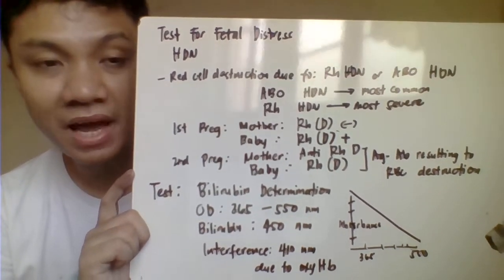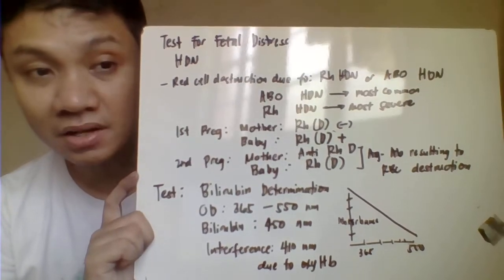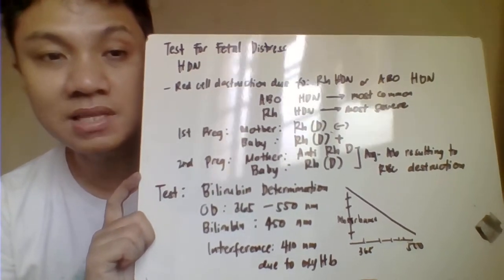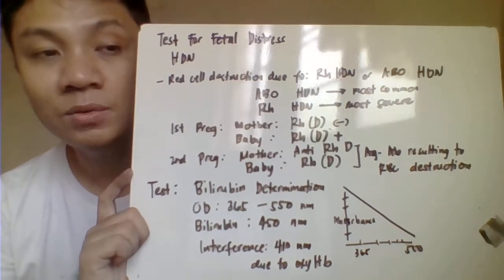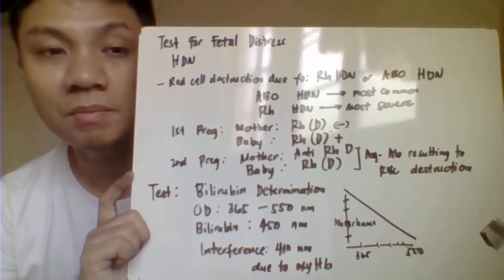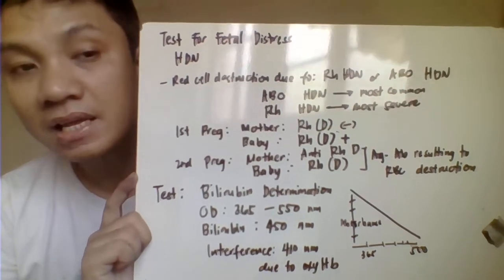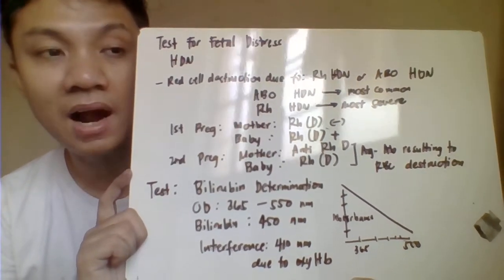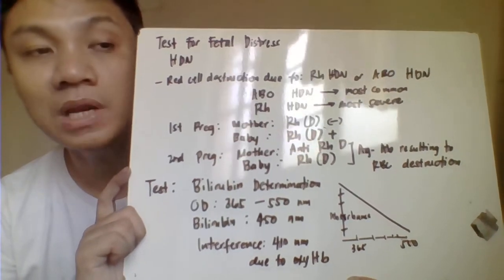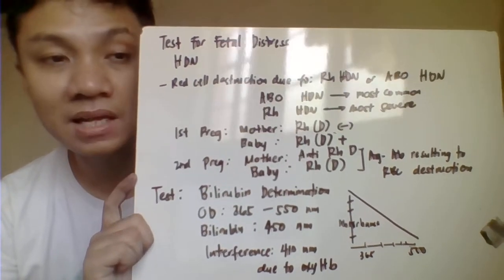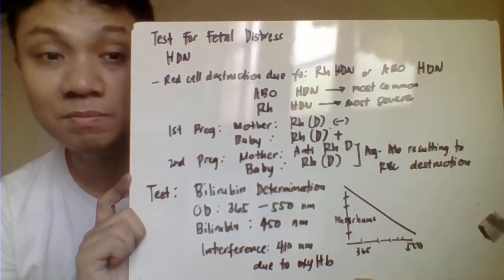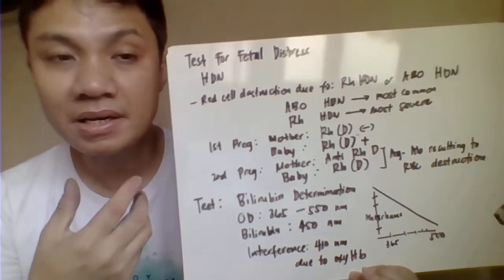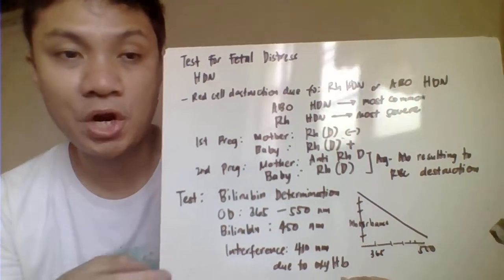Because the mother is negative for RhD, during the first pregnancy the mother will be exposed to the RhD antigen, and what will happen is that the mother will be sensitized and eventually develop an anti-RhD antibody, since she does not have that antigen. So she will develop the antibody because she was exposed to it. In the first pregnancy, HDN will not occur.